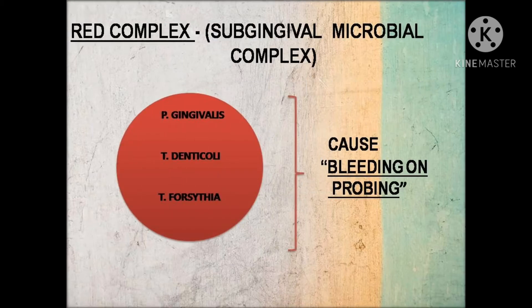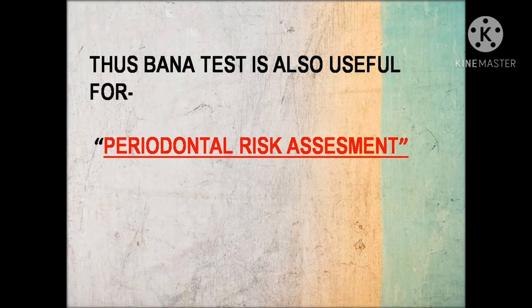One important point to note is that the three bacterial species detected by BANA test — P. gingivalis, T. denticola, and T. forsythia — are subgingival microbes which are part of the red complex. These are associated with bleeding on probing. Thus, by detecting the microbes of the red complex, BANA test is also helpful for periodontal risk assessment in patients.